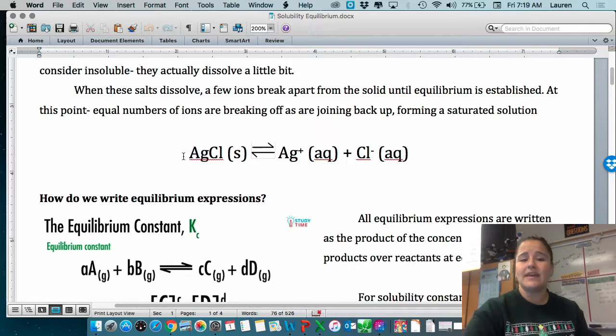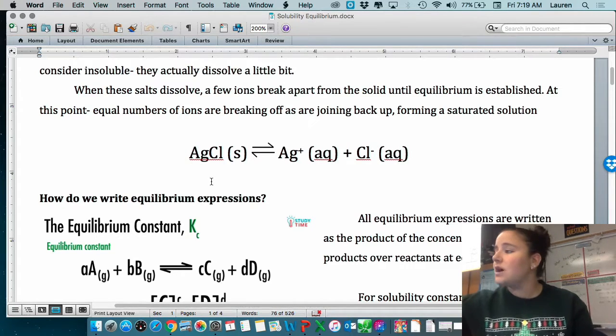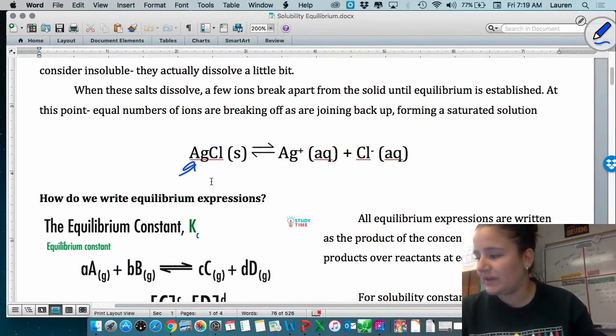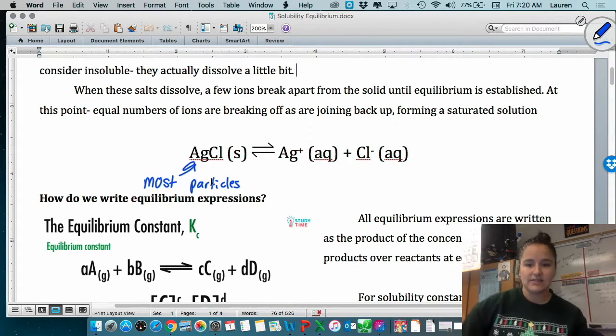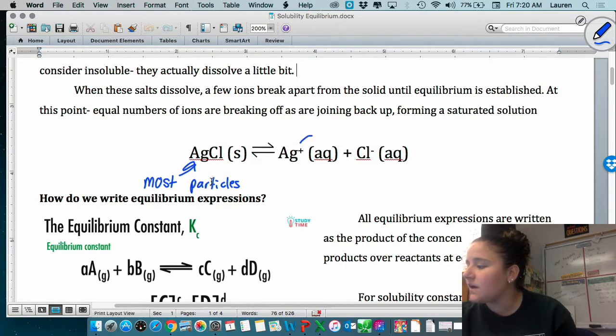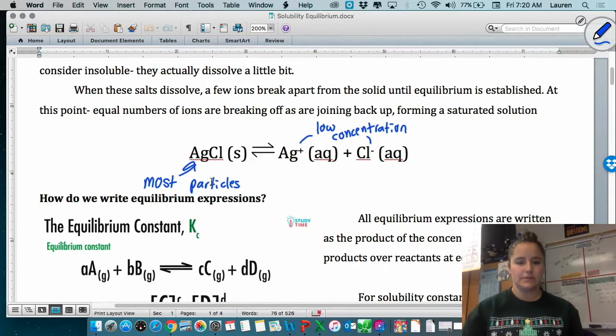Basically, if you have something like silver chloride, which is an insoluble salt, most of it is going to be solid. Most particles are going to be bonded together in that solid form. But what's going to go on is you're going to have a very low concentration of the silver ions and the chloride ions. And this is in equilibrium.